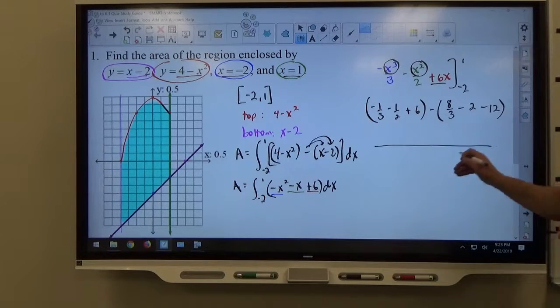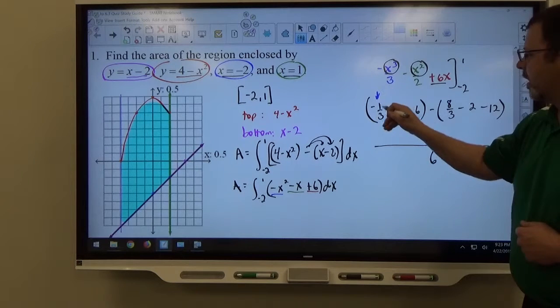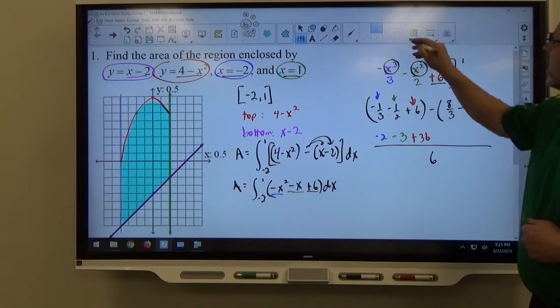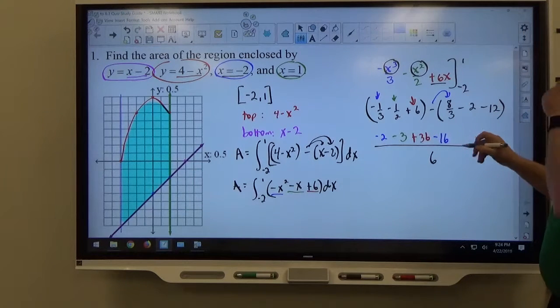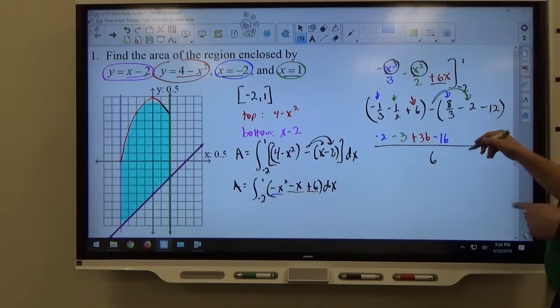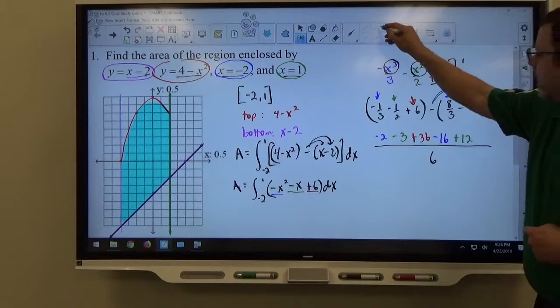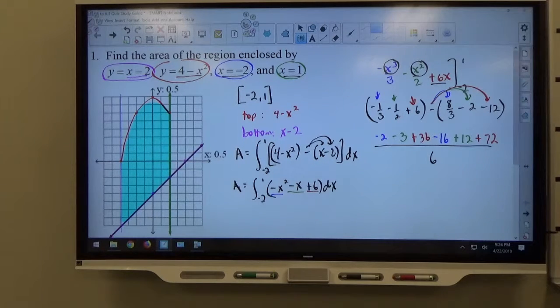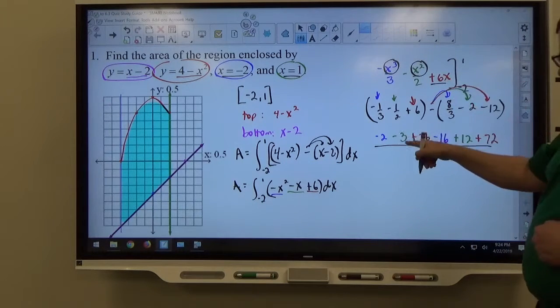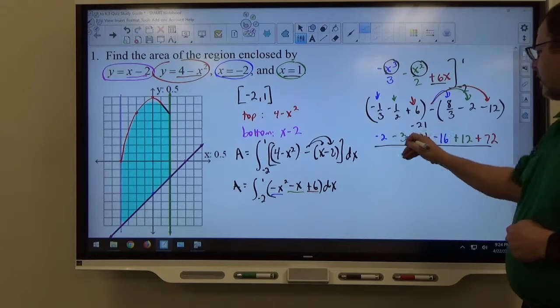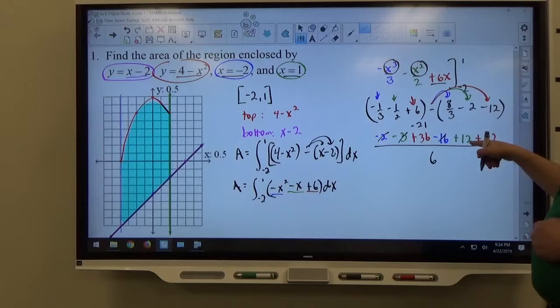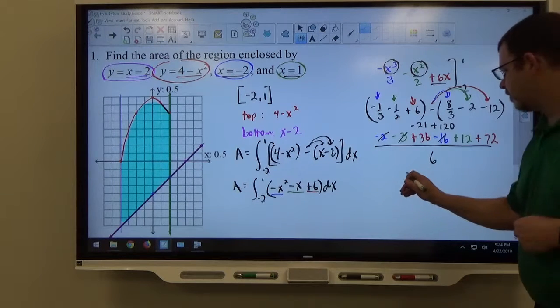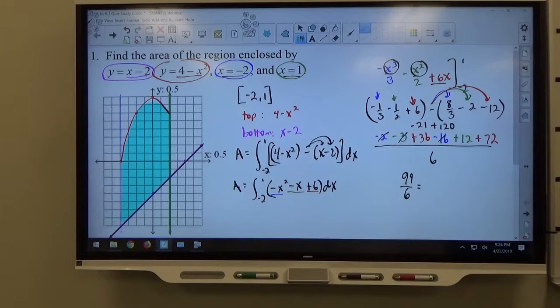I like to get a common denominator right off the bat. So common denominator is 6. So that's negative 2 over 6, negative 3 over 6, positive 36 over 6. Then I've got this minus sign, so it'll be minus 16 over 6, minus minus makes plus 2, plus 12 over 6, and then plus 72 over 6. So that's the end result of all of that. If we add up the numbers on top, negative 2 minus 3, negative 5, and negative 16 make negative 21 for all the negatives. 36 and 12 is 48 plus 72 is 120 for the positive ones. We get 99 over 6, and that reduces by 3 down to 33 over 2.